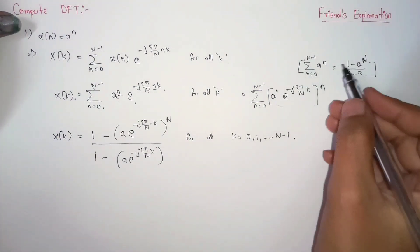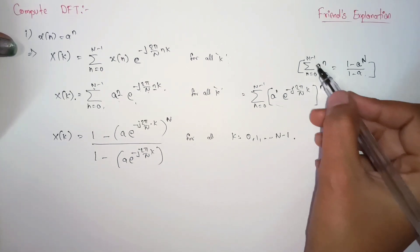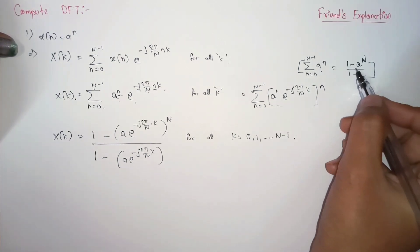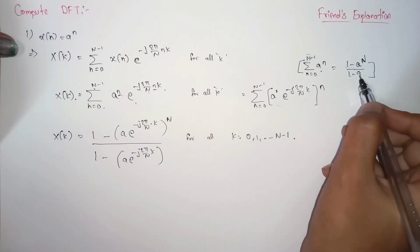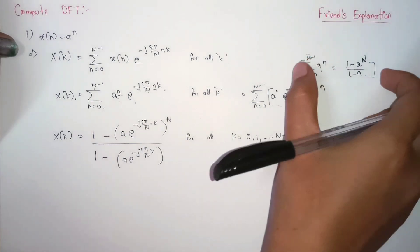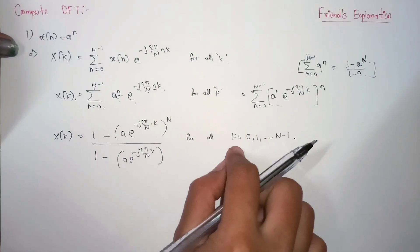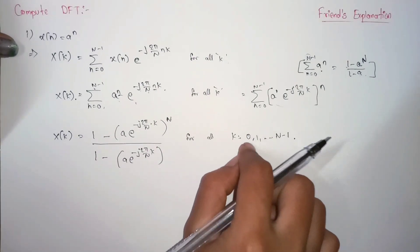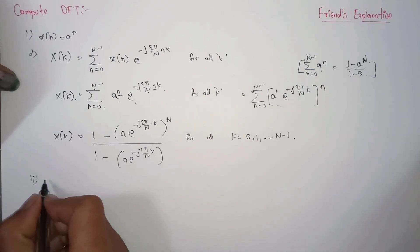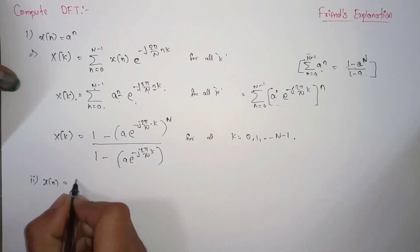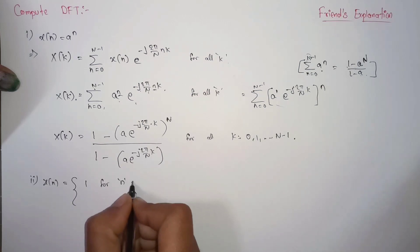According to the geometric series formula — summation from n equals 0 to N minus 1 of a^n equals 1 minus a^N divided by 1 minus a — we computed this result. This is the Discrete Fourier Transform of a^n, valid for all k values from 0 to N minus 1.